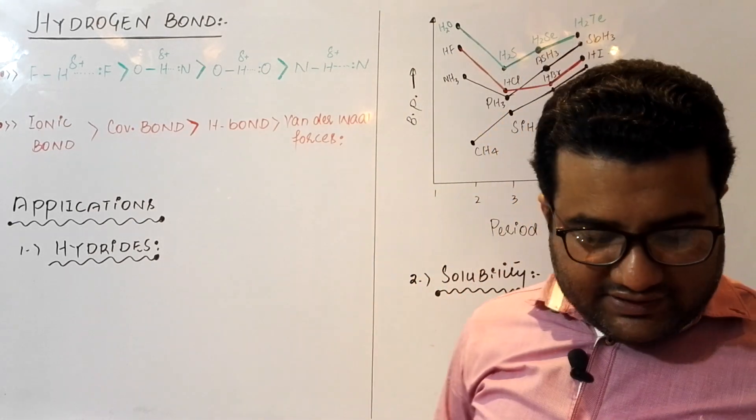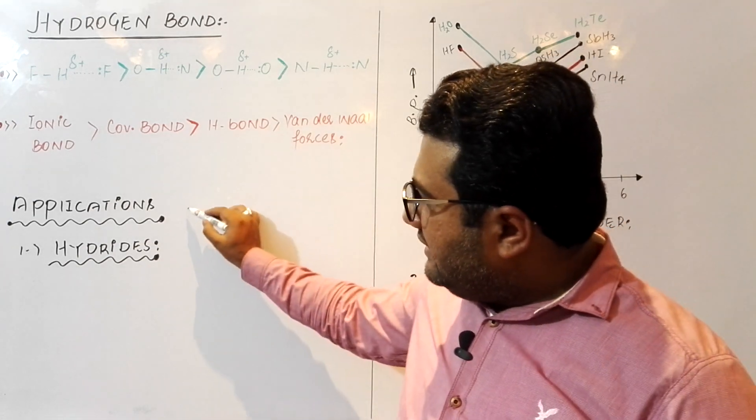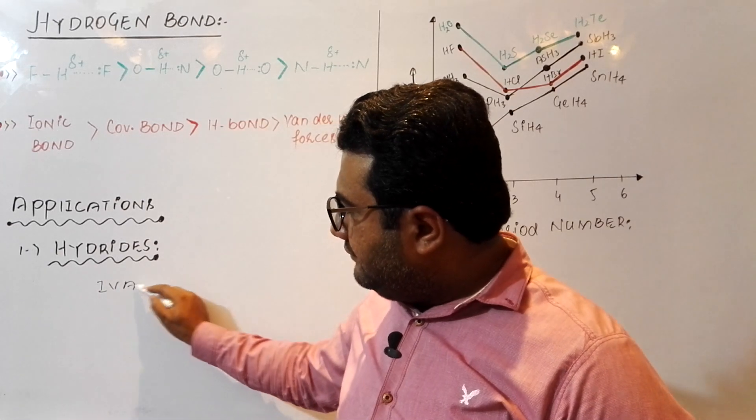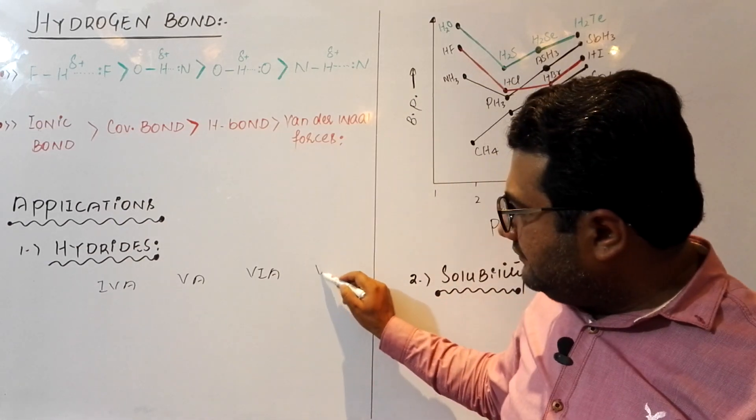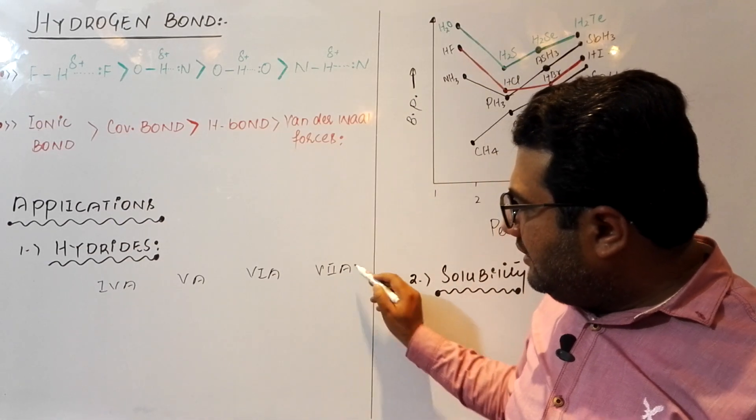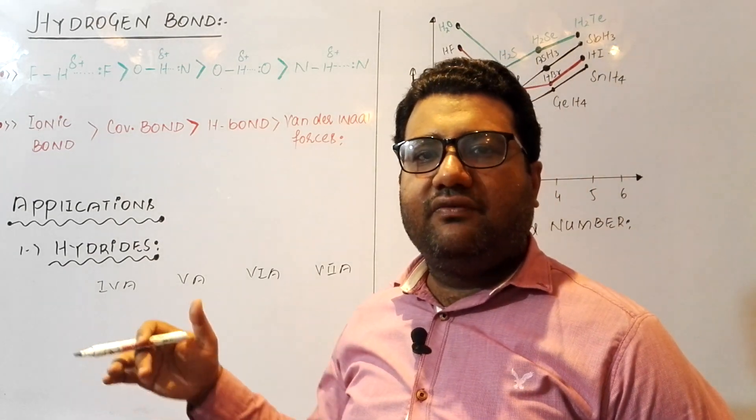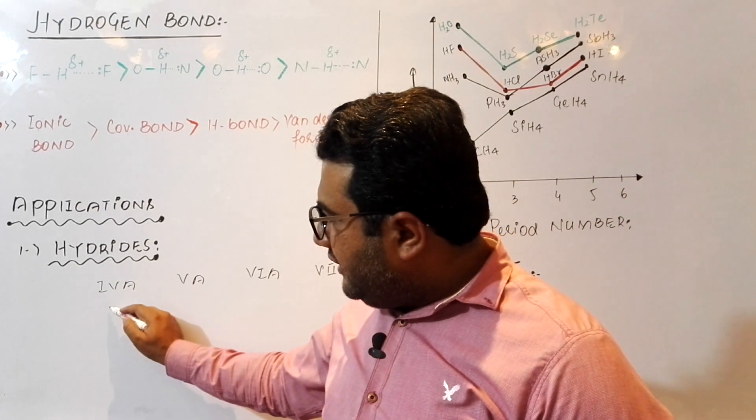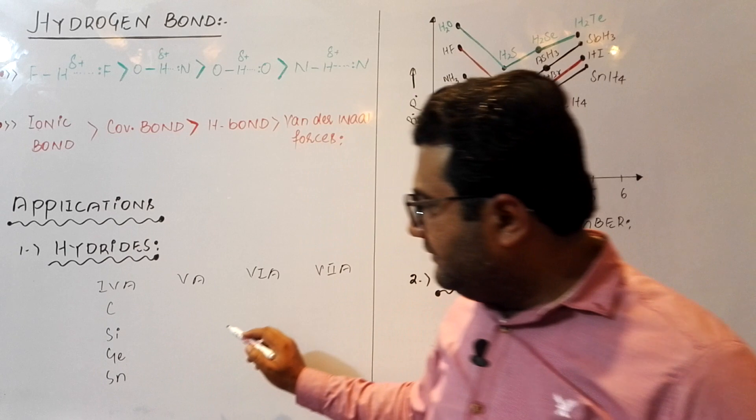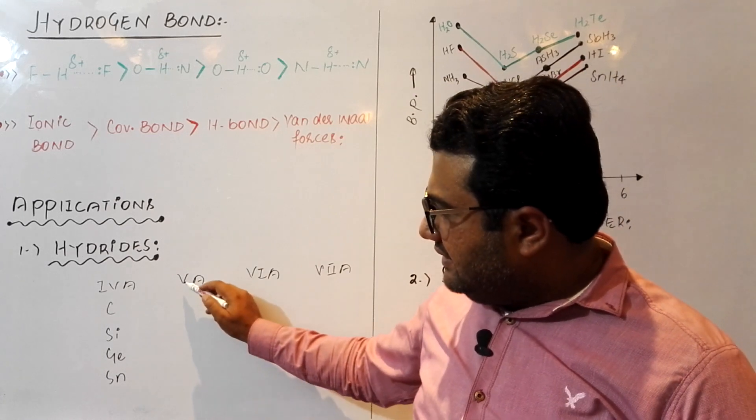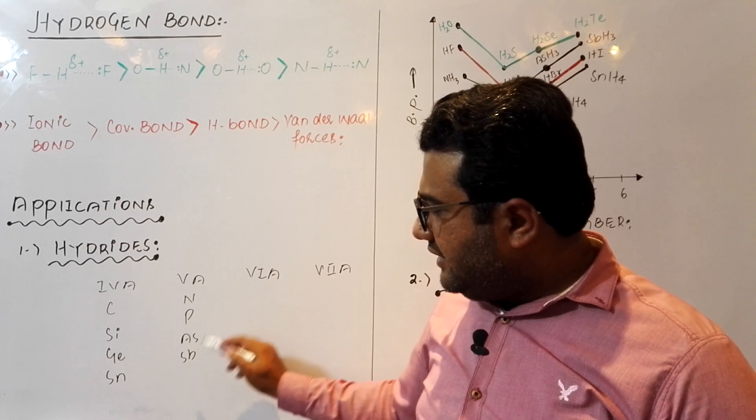What are the applications of hydrogen bonding? The first application is about the hydrides. Hydrides of group 4A, 5A, 6A, and 7A. All these hydrides are covalent hydrides in which the hydrogen will be covalently bonded to other elements. 4A has carbon, silicon, germanium, tin, and lead. In 5A, nitrogen, phosphorus, arsenic, antimony, and bismuth.